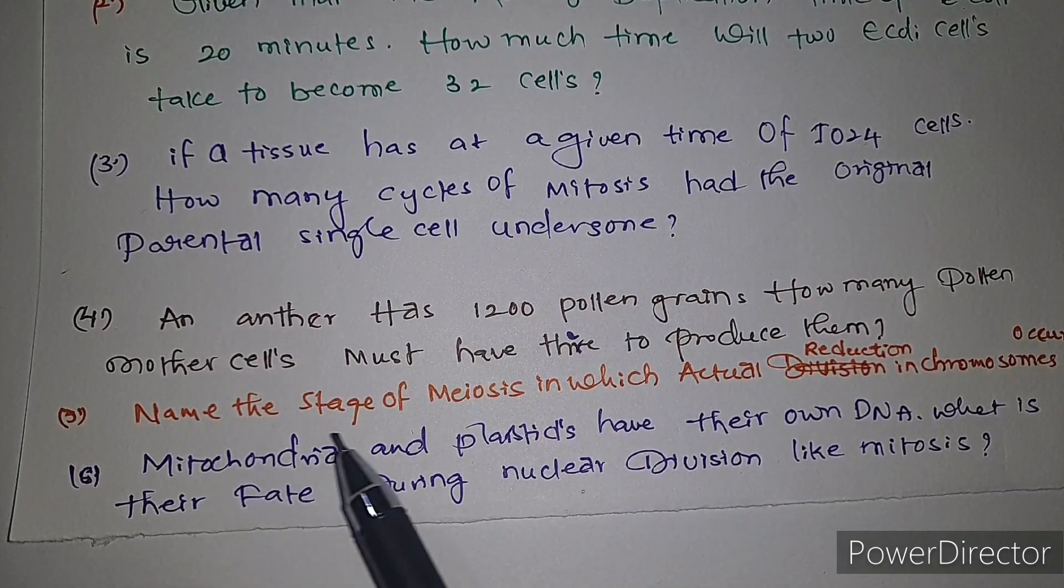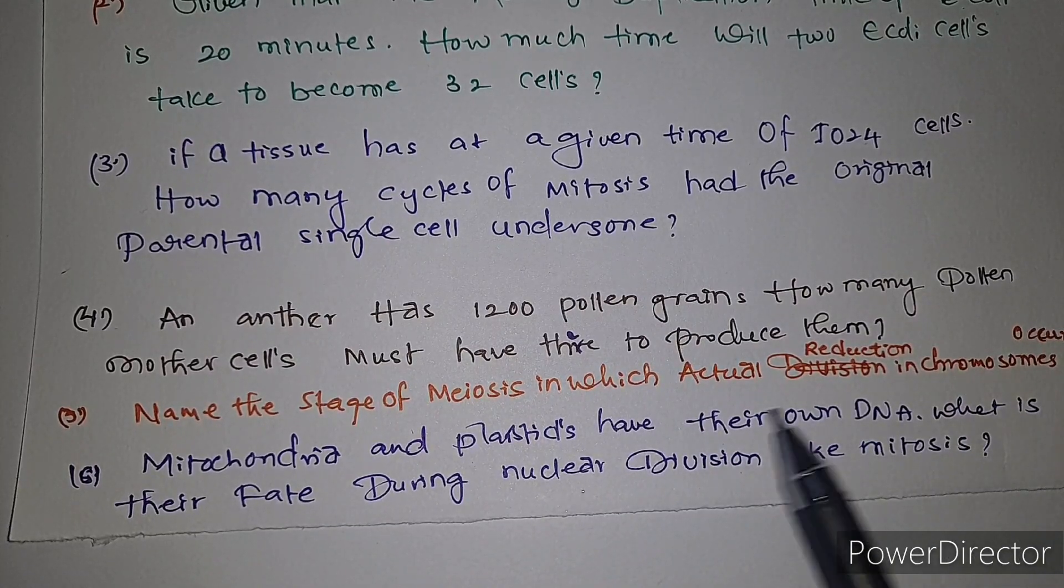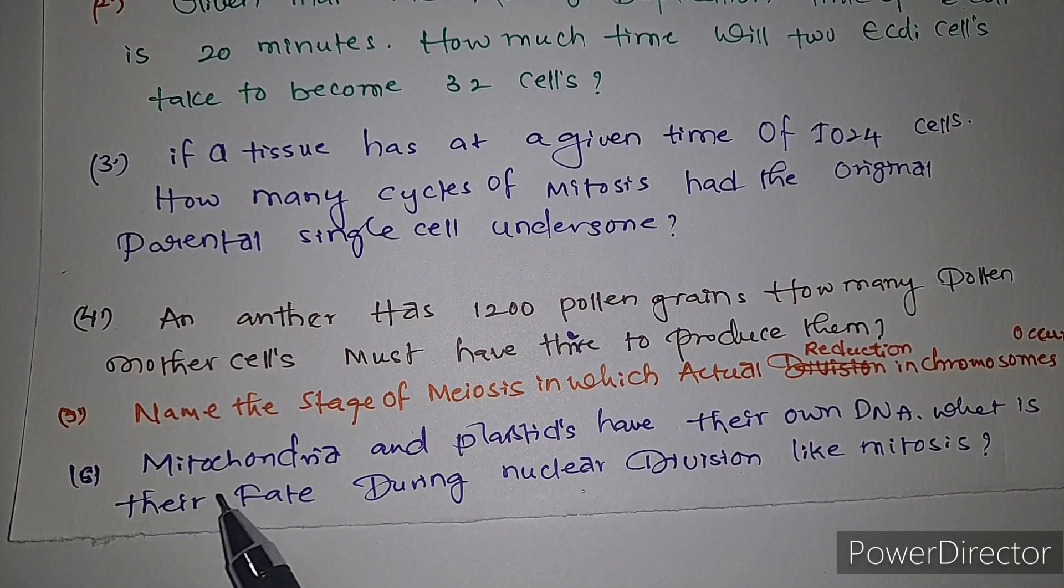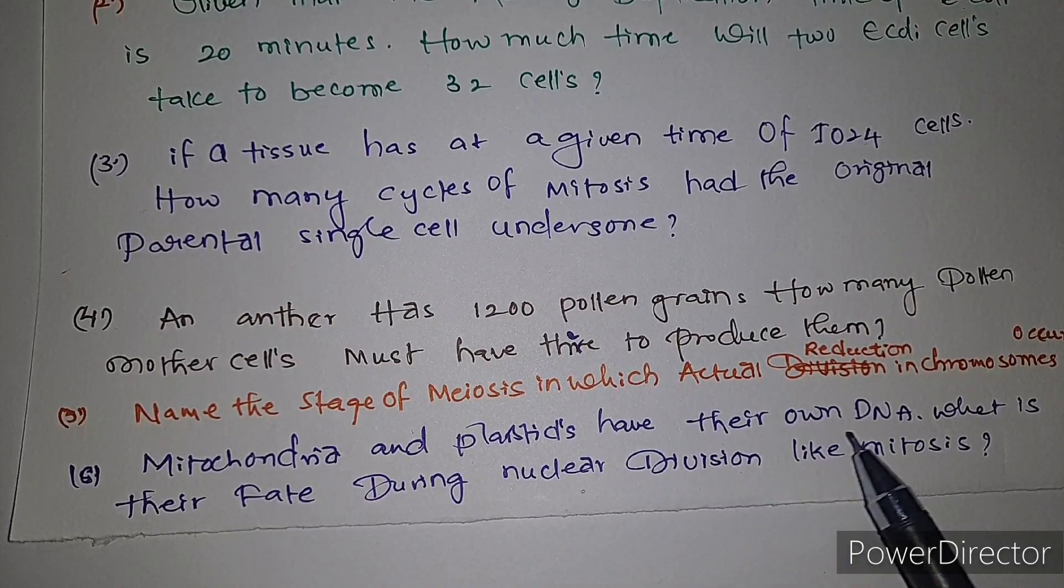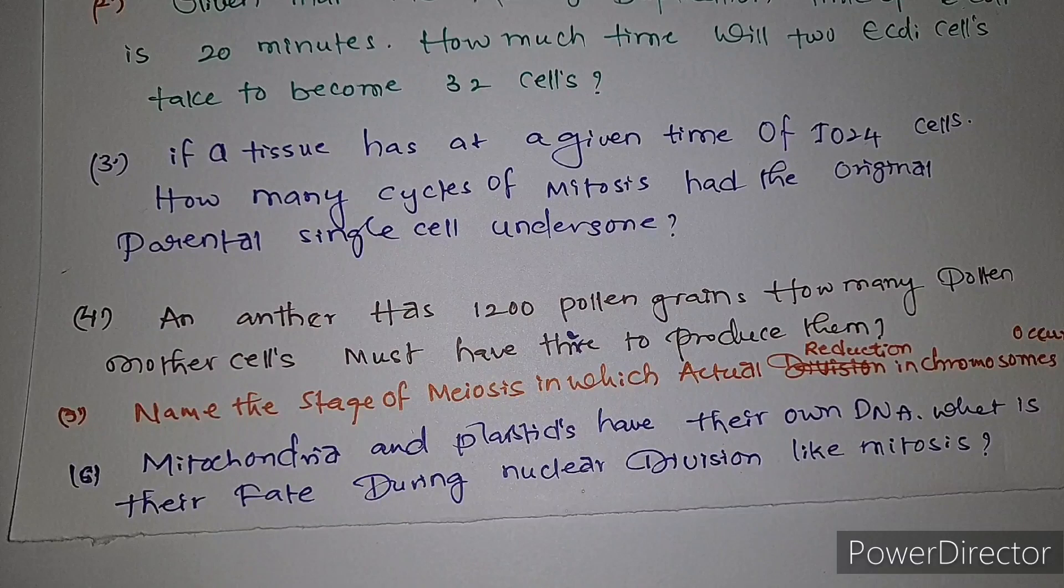Sixth question: mitochondria and plastids have their own DNA. What is their fate during nuclear division like mitosis? Very short answer questions from biomolecules.